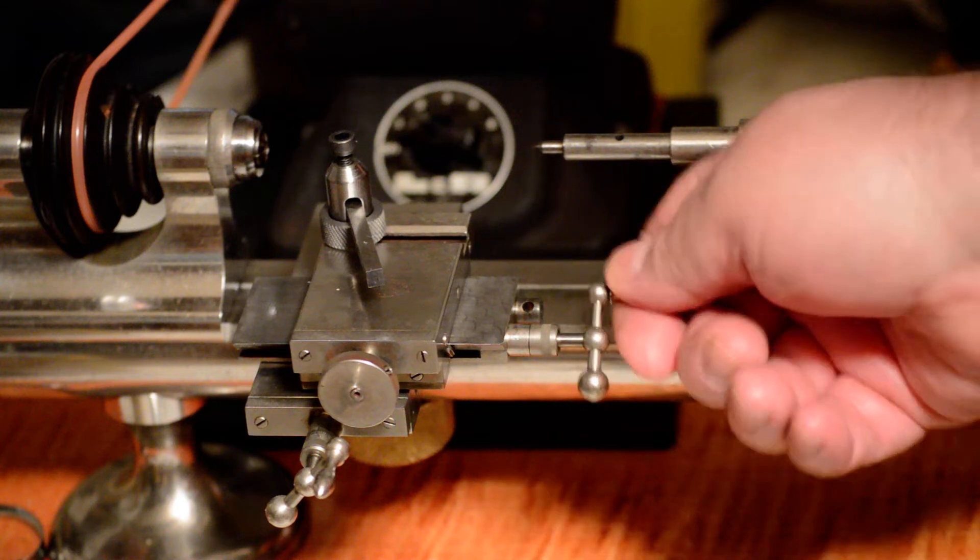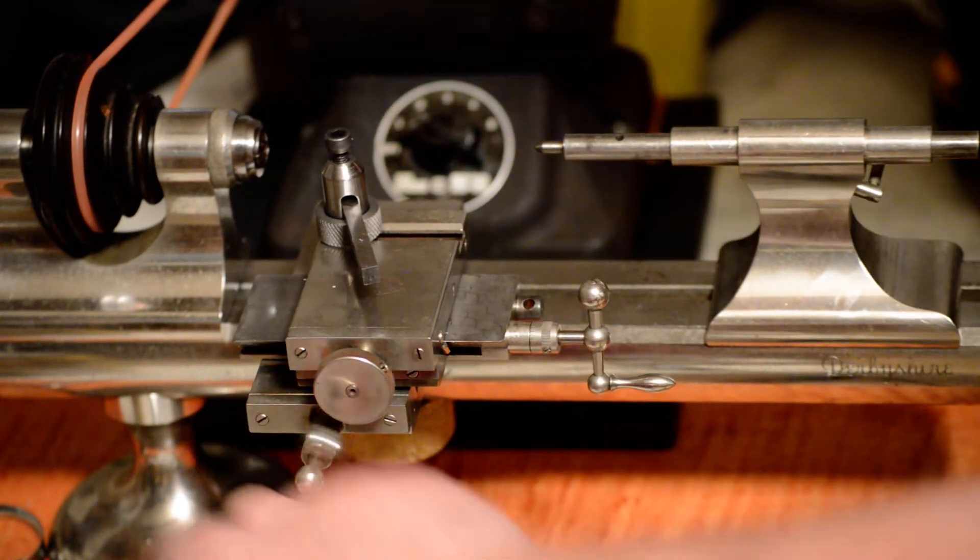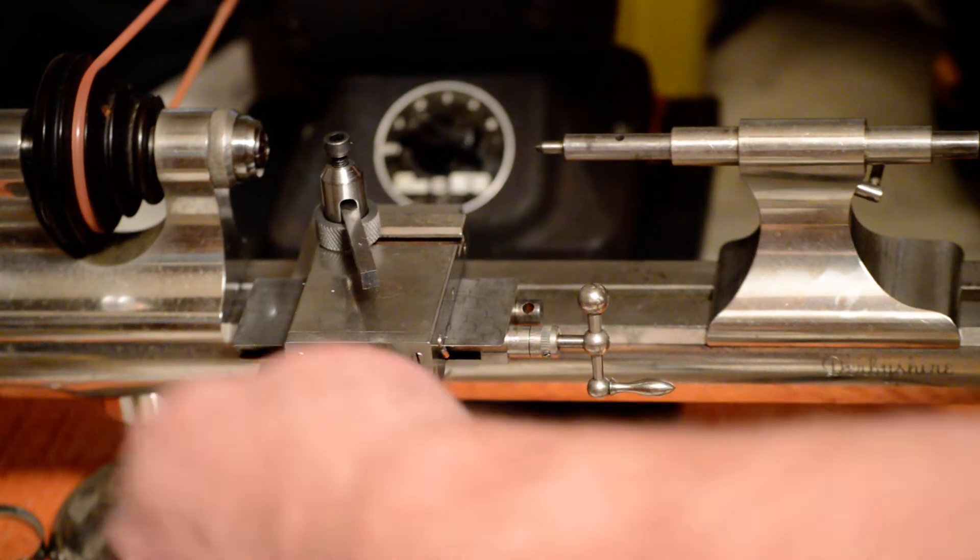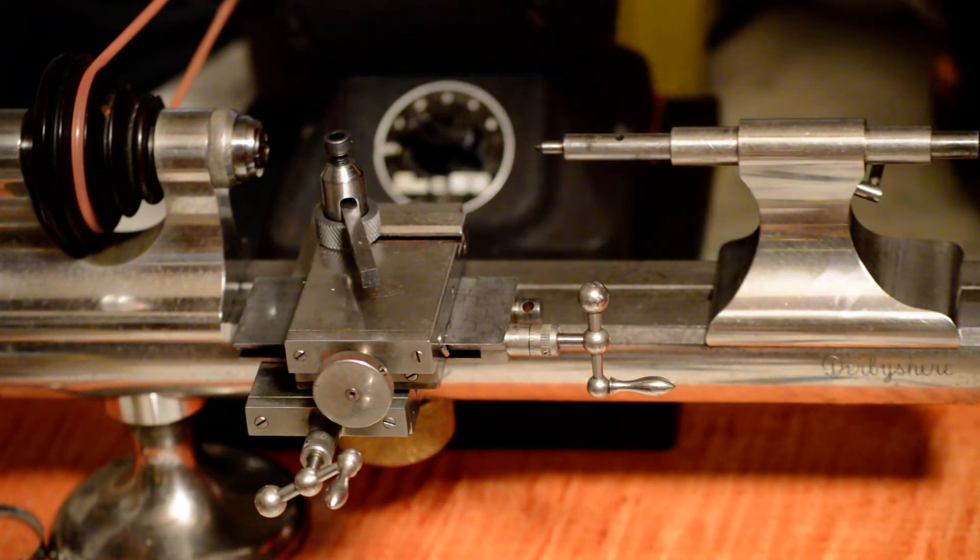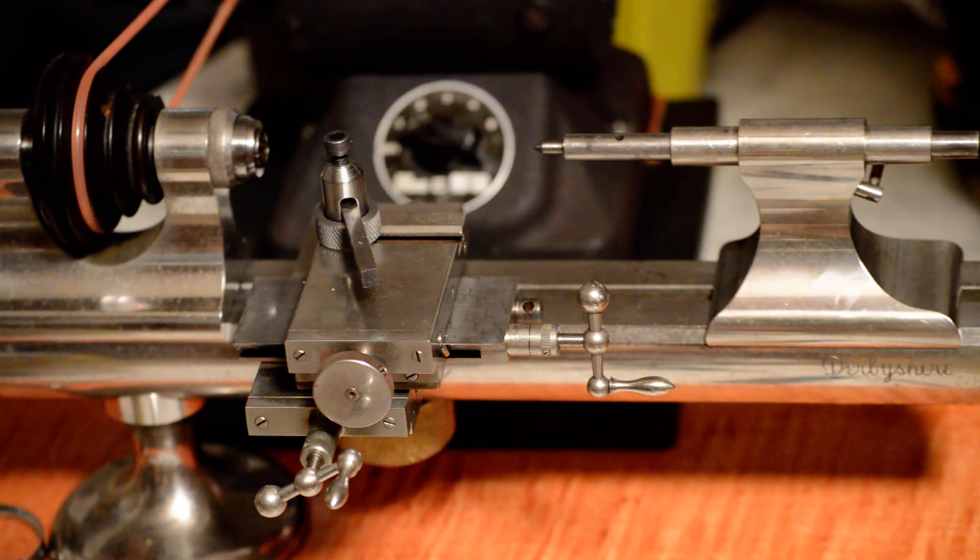This is a very small watchmaker's lathe and this slide on here has scales on it. The principles are the same with larger lathes. Some lathes incorporate indirect reading and some don't, so you might want to know that before you start doing a project when you use different lathes.